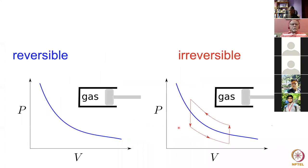Just to remind you of the meaning of a reversible and an irreversible process — the title of this talk includes the term irreversible. If I have a cylinder containing an ideal gas with no friction between the piston and the cylinder, and I increase the pressure along a curve so the volume decreases, then when I reverse the process we go exactly back along that line. In this cyclic process there is no free energy dissipated — you recover all the energy that you put in.